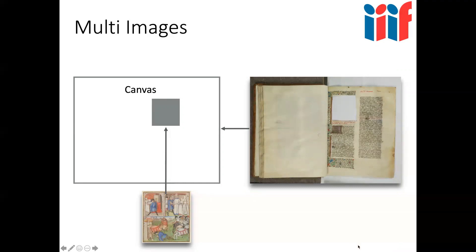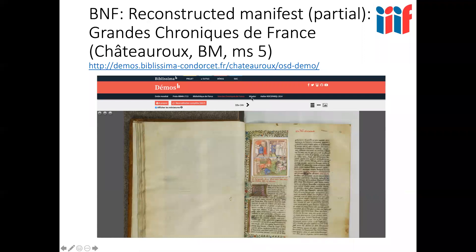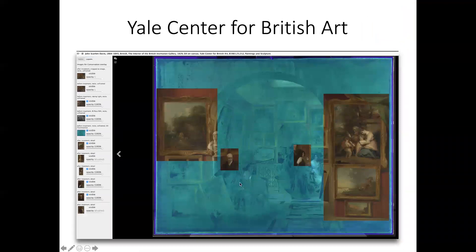Another alternative is painting two images onto the same canvas at different positions. The manuscript page is painted on the full canvas, but an illustration is painted onto a particular part of the canvas. In this example the two images come from different places — the manuscript from the BNF in France and the illustrations from a different institution in Paris. Both have published them as IIIF images, and someone has created a manifest where the two images are reunited digitally. If you click 'affix miniatures' in the live demo you'll see the miniature pop into the image.